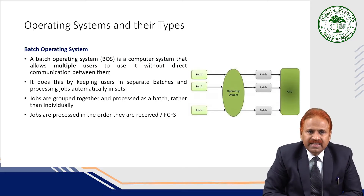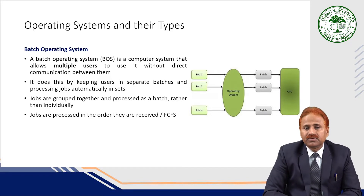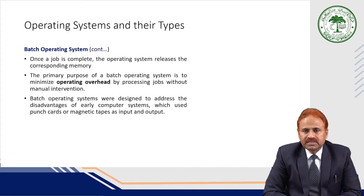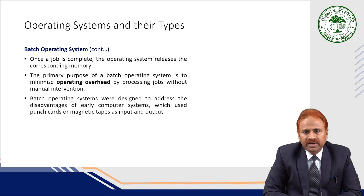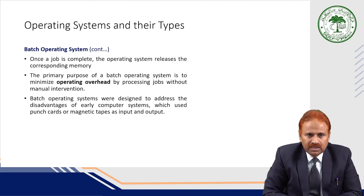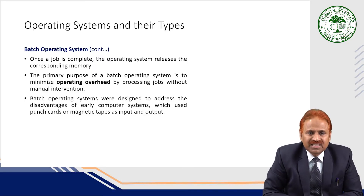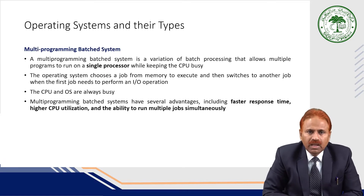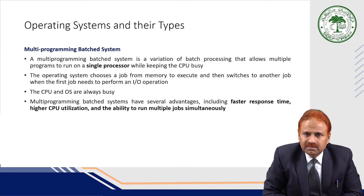Jobs are processed in the order they are received — first come, first served. Once a job is complete, the operating system releases the corresponding memory. The primary purpose of a batch operating system is to minimize operating overhead by processing jobs without manual intervention. Batch operating systems were designed to address the disadvantages of early computer systems which used punch cards or magnetic tapes as input and output.